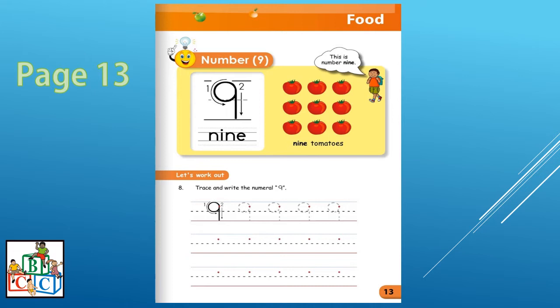Let us count. 1, 2, 3, 4, 5, 6, 7, 8, 9. So we have 9 tomatoes. How many tomatoes do we have? 9. Let us spell the number word 9. N-I-N-E nine. Again, N-I-N-E nine.